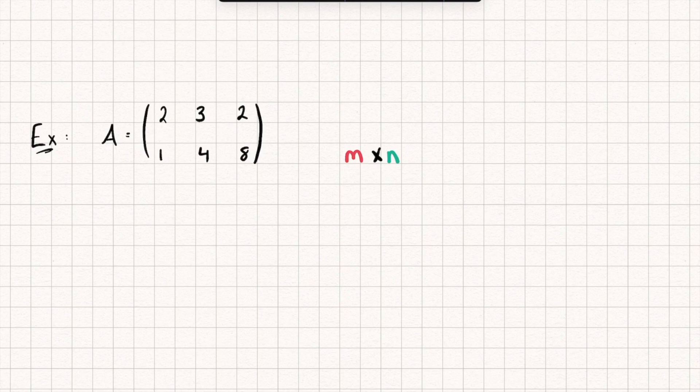So this matrix here has two rows, so M is equal to two. And it has three columns, so N is equal to three. So this is a two by three matrix.